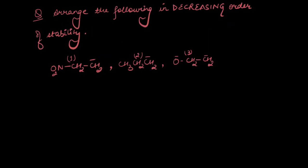Let's move on to the next one. Arrange the following in decreasing order of stability — we have carbanions here. Carbanions are electron-rich species; in order to get stabilized, they want to shed electron density through sigma bonds, so they would love to have electron-withdrawing groups around them — groups that show minus-I effect. Looking at the first one, the NO2 group attached does have a minus-I effect and pulls electron density towards itself. In the second case, we have an alkyl group, which pushes electron density through sigma bonds, making it an electron-donating group that tends to destabilize the carbanion.